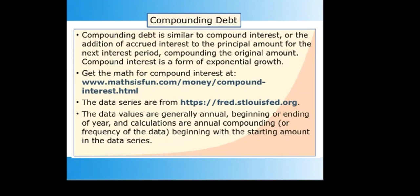The money system must continuously expand by compounding debt in order for the existing debts and interest to be paid with money created by subsequent debts. This monetary inflation can be modeled using compound interest math because interest will be the key factor in how much the debt must be compounded to make repayment possible. In rough terms, the debt must be compounded at a rate that somewhat exceeds the interest rate. Like compounding debt, compound interest is the process of adding accrued interest to the original principal so that future interest is based on the larger amount. This results in exponential growth.